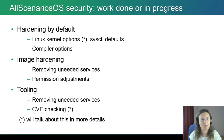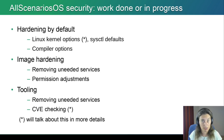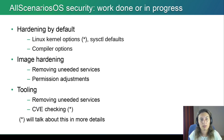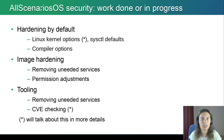What do we have in there? We have hardening added by default in the distribution. That includes Linux kernel options, sysctl controls, and compiler options. We've done some image hardening — removing services we do not need, adjusting permissions of different executables and services. In tooling, removing unneeded services as well. And we do CVE checks. Two items — CVE checking and Linux kernel options — are something I'm going to cover in more detail in the next few minutes.